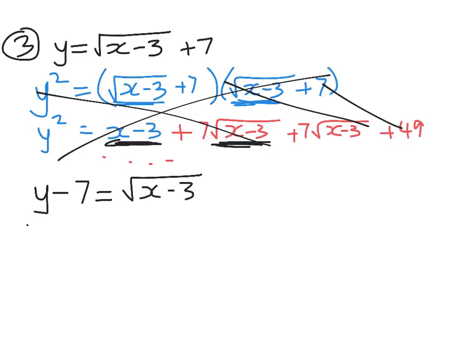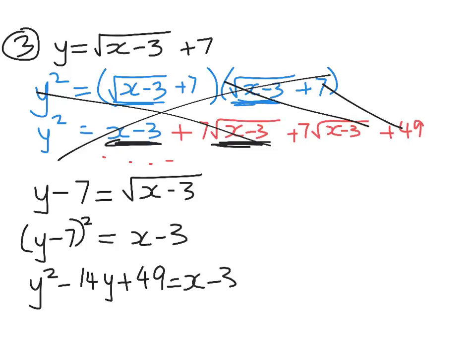Now when we square both sides, we have the messy stuff happening on the left-hand side, and we just have x minus 3 here. So we get y squared minus 14y plus 49 equals x minus 3. And our last little step is to add 3 to both sides. So we have y squared minus 14y plus 52 equals x.